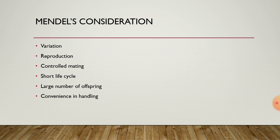Mendel took certain concentrations for his experiment. First one is variation: the organisms chosen for the experiment should have a number of detectable differences, and at the same time only a single detectable trait or character is considered. Reproduction: the chosen organism should be sexually reproducing. Controlled mating: the chosen organism could mate in a controlled environment. It should have a short life cycle, a large number of offspring, and be convenient.